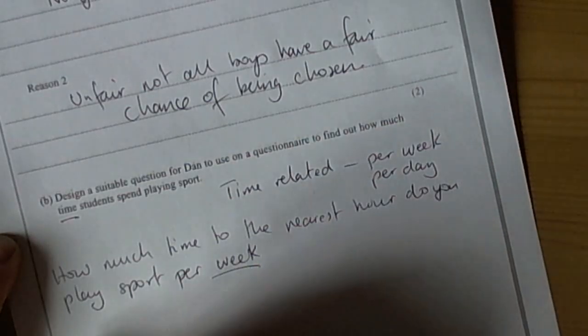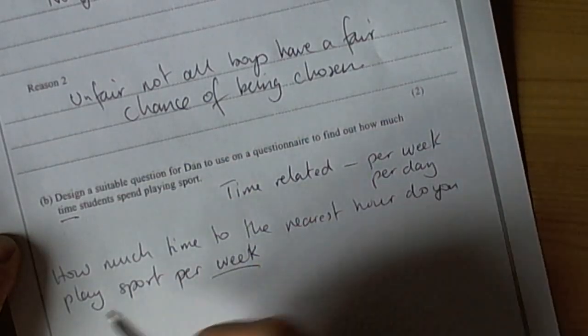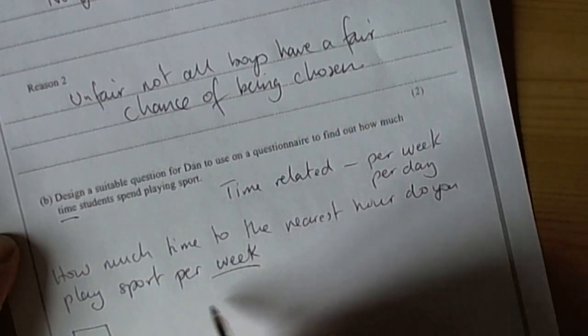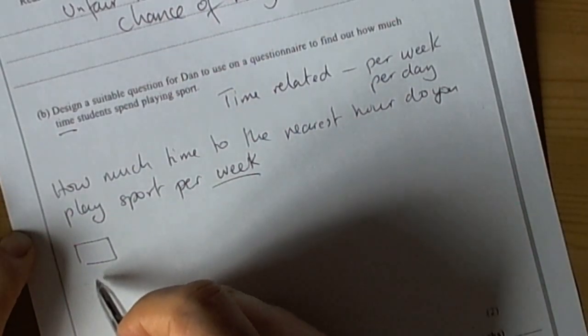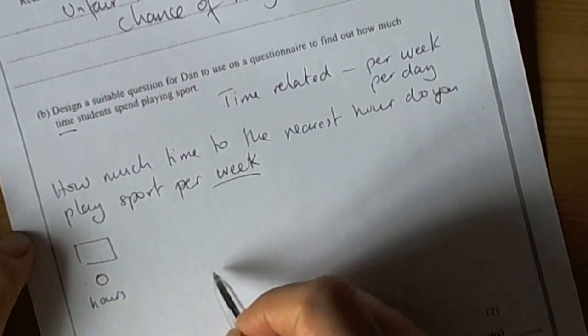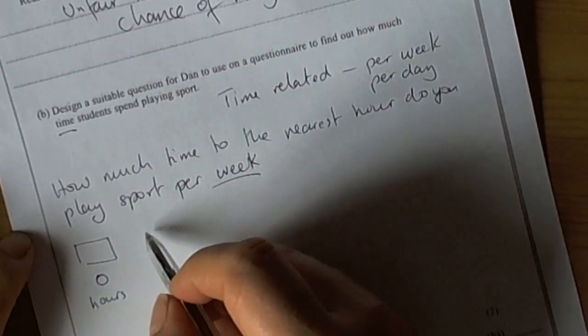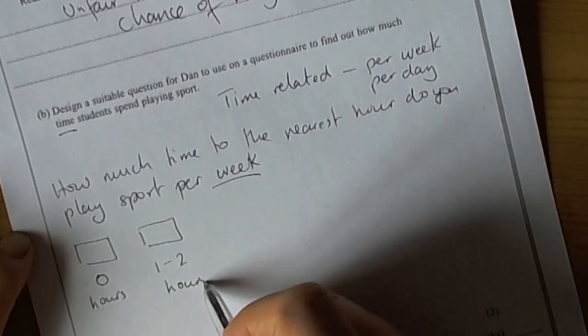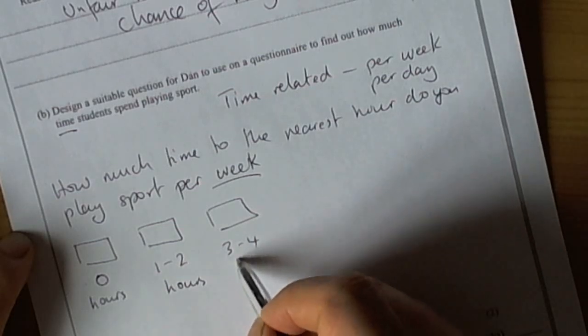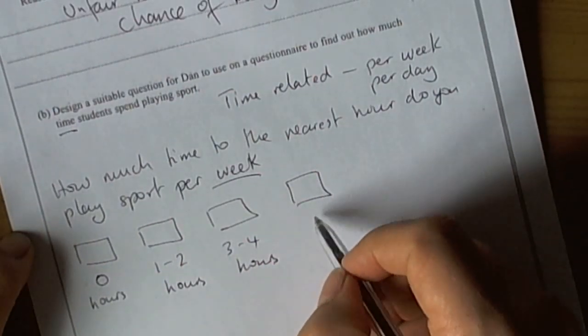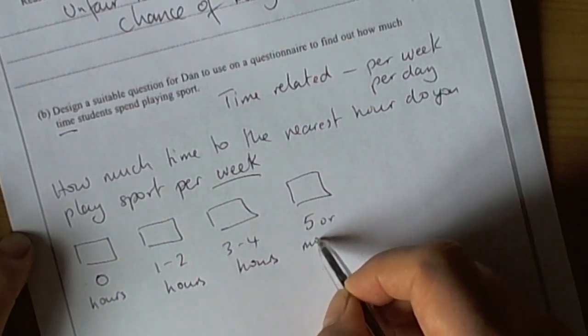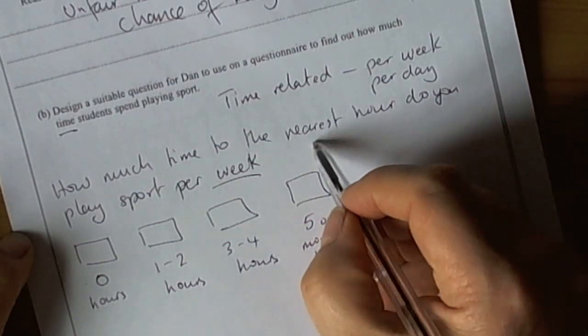So, we've got the time related in. We also need some response boxes because the idea of this is it's going to make it easy to collect the information. So, in the exam, a minimum of three response boxes should be fine. So, if we have zero hours for those who don't like doing sports at all, and it goes to the nearest hour, we could say the next box is one to two hours. And the third box could be three to four hours. And the fifth box has to be that one where somebody does five or more. So, five or more hours.